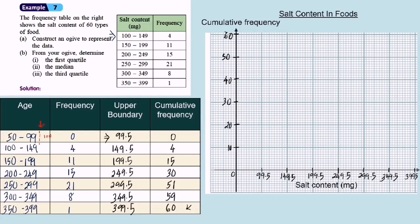We start with 99.5 with cumulative frequency 0. Next is 149.5 with cumulative frequency 4. Next is 199.5 with cumulative frequency 15, then 30, 51, 59, and 60.